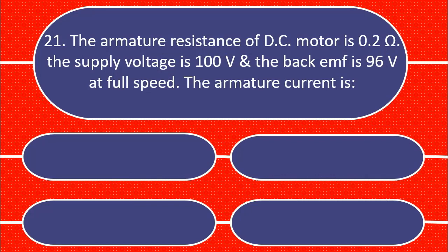The armature resistance of DC motor is 0.2 Ohm. The supply voltage is 100 Volt and the back EMF is 96 Volt at full speed. The armature current is.